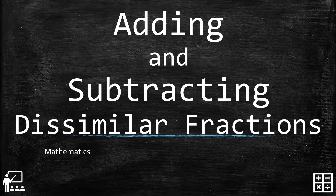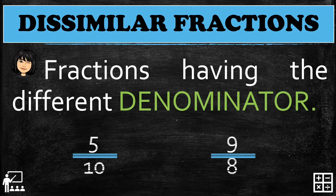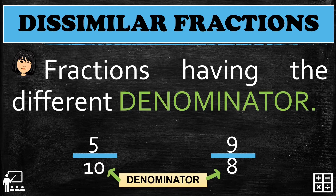This video lesson is about adding and subtracting dissimilar fractions. The similar fractions are fractions having the different denominator. For example, 5 over 10 and 9 over 8 are examples of dissimilar fractions because they have different denominators, which are 10 and 8.